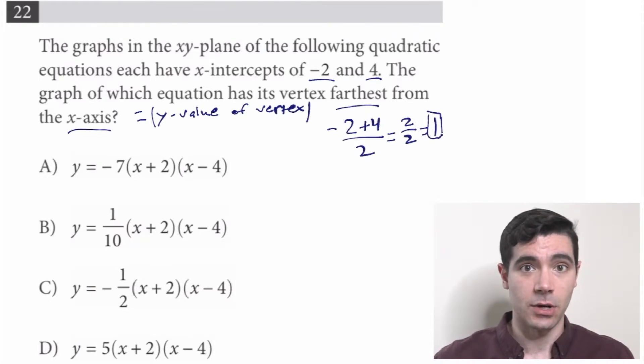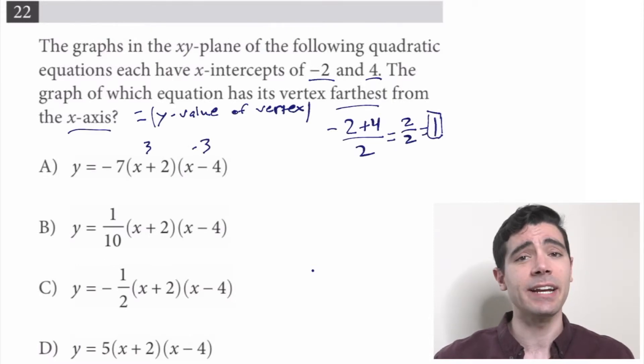Now we're going to plug 1 into each of the equations and select the one that gives us the y-value with the largest absolute value. So let's start with this first one. Negative 7 times—1 plus 2 is 3, 1 minus 4 is negative 3—so that'll be negative 7 times negative 9, or 63. Ooh, impressive. So we've got 63 there. Let's move on.